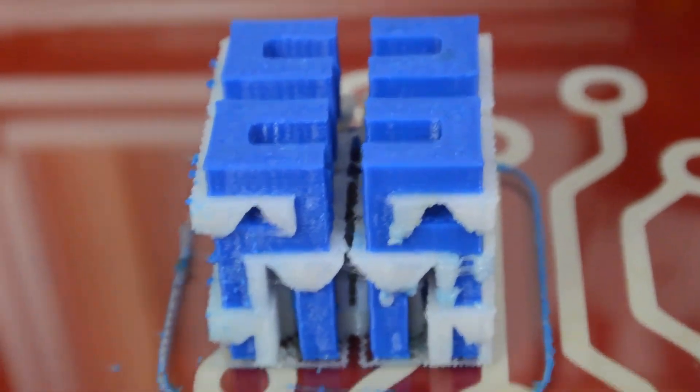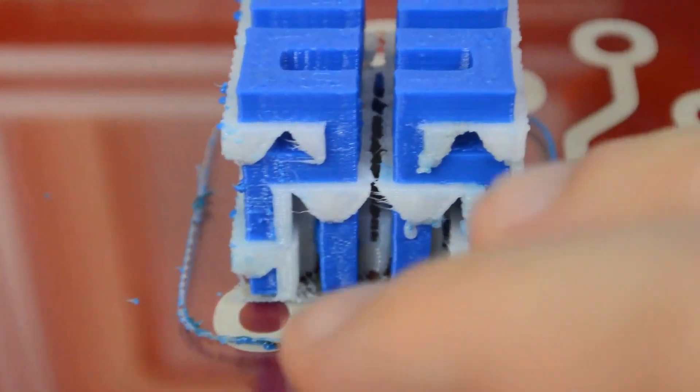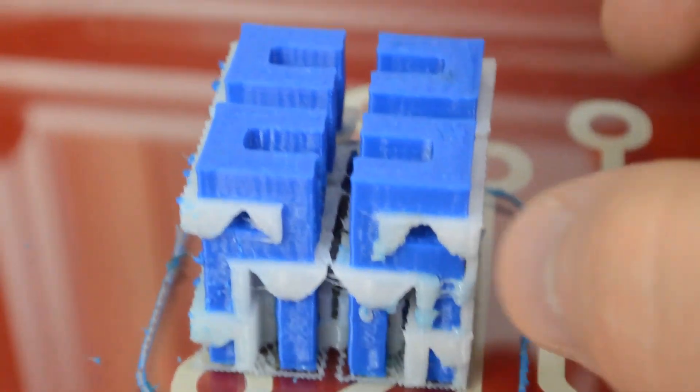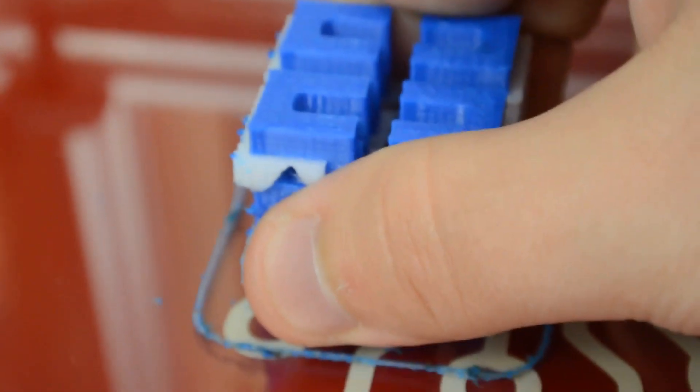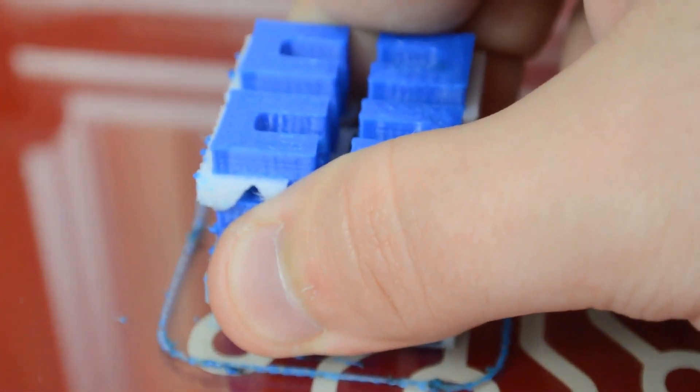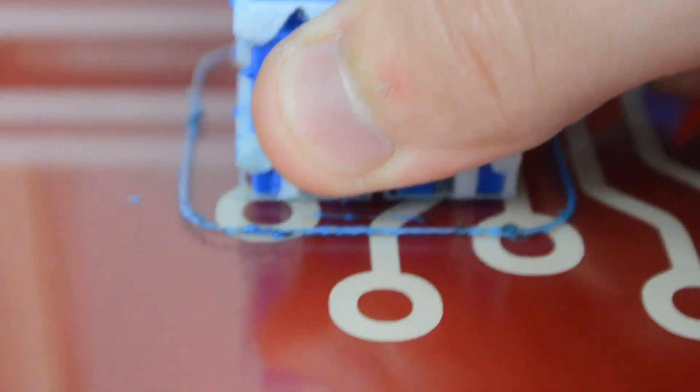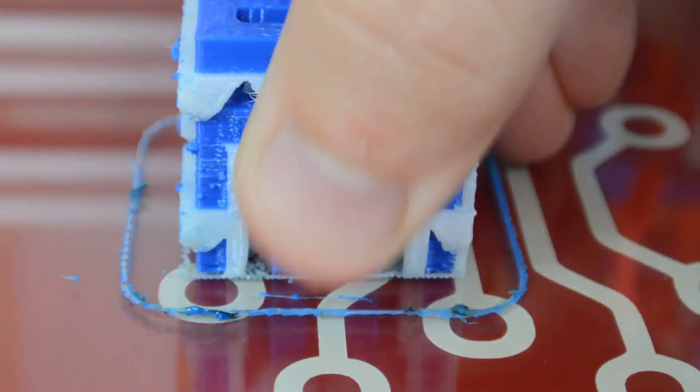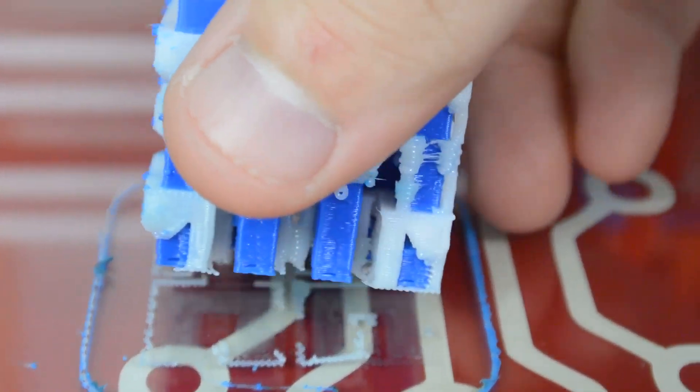So, here's the finished print. You can see that it turned out pretty well for absolutely no calibration with the HIPS filament. So, I'm going to try to peel it off the print bed. It's been a few minutes. The print bed's cooled down, so I should just be able to lift it off. Oh, you can hear it cracking. Hopefully, that's the good kind of cracking and not the bad kind. And there we go.